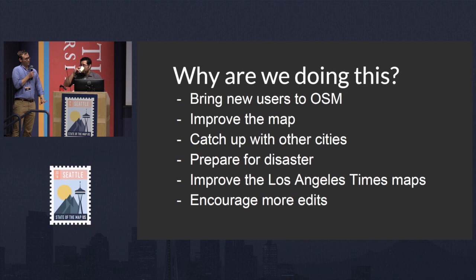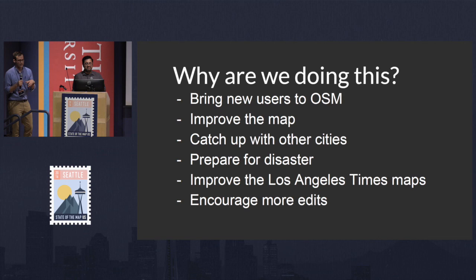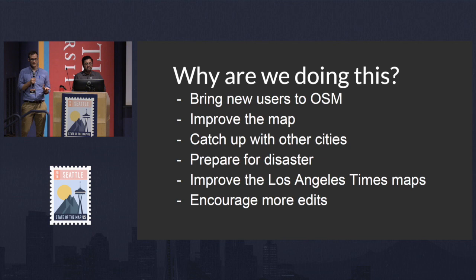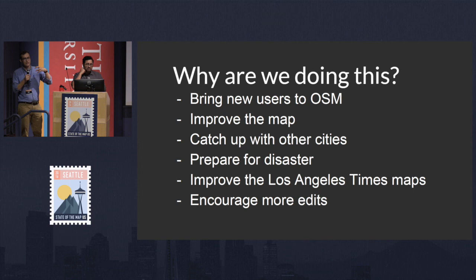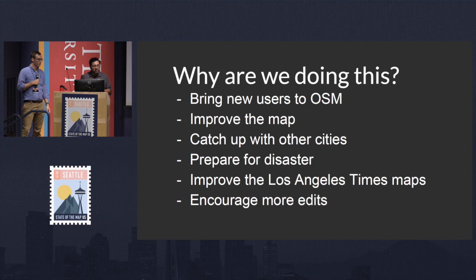Around this point, we had imported a lot of buildings and Omar and I sat together and asked: why are we doing this? We hadn't really defined that. So we came up with this list: bring new users into OpenStreetMap, improve the map, catch up with other cities, prepare for disasters. There's going to be a big earthquake that will hit Los Angeles, and if there's a building dataset already there, we could use it to tag particular buildings as destroyed, damaged, red-tagged, or deficient. Also: to improve the Los Angeles Times maps — we use these maps — and to encourage more edits.